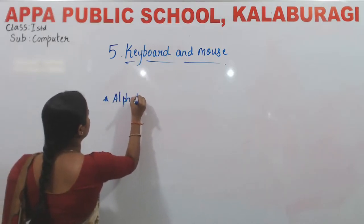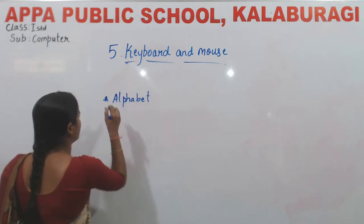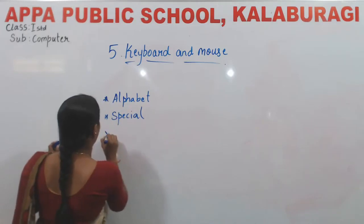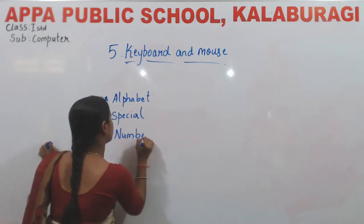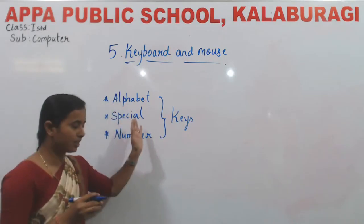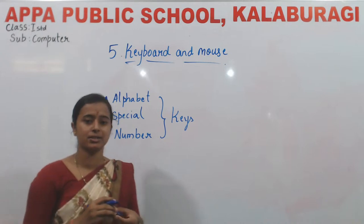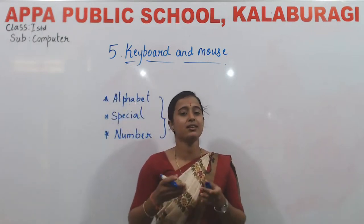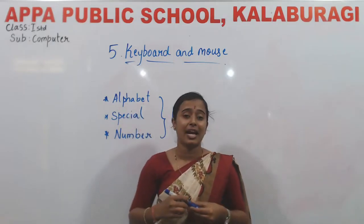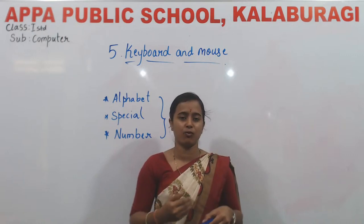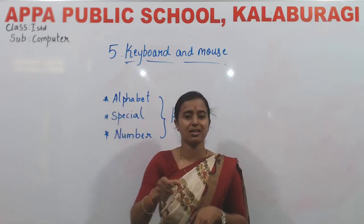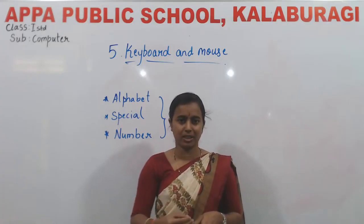We learnt alphabet keys, special keys, and number keys. What is the use of alphabet keys? From A to Z, we have totally 26 alphabet keys. Using the alphabet keys, we can write letters, we can type letters. For example, if I want to type 'apple' or 'ball', we need alphabets — so alphabet keys are available on the keyboard to type letters.